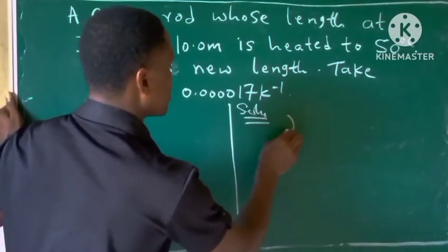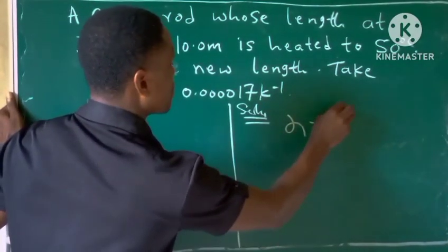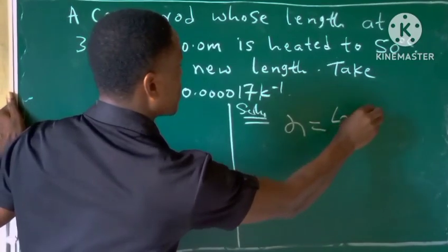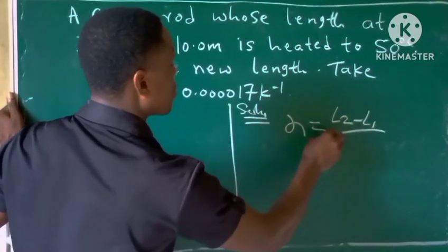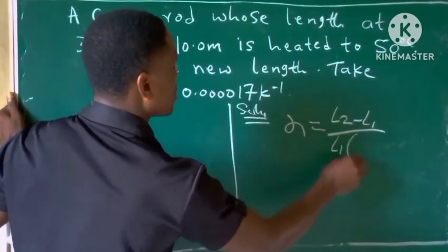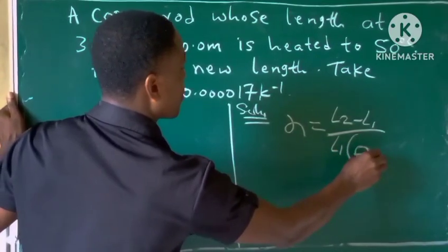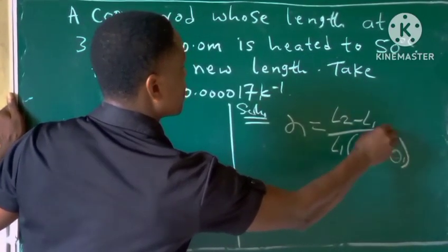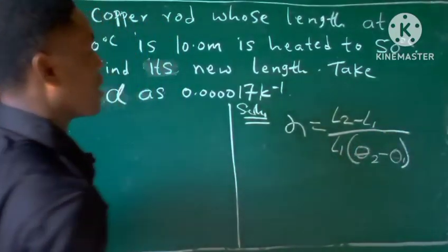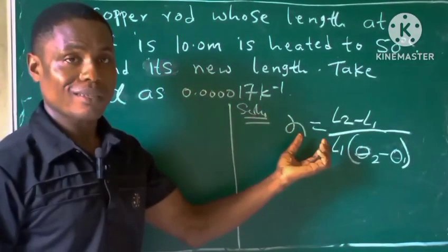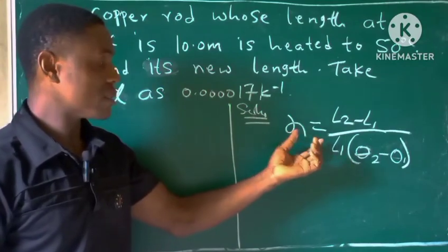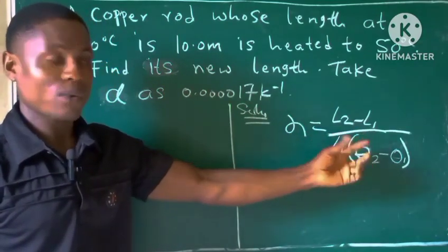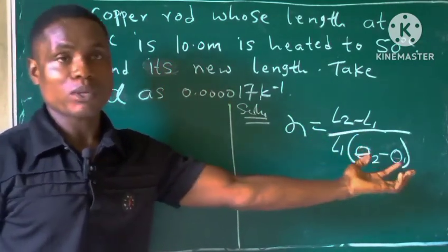From linear expansivity we have a formula which is: linear expansivity equals L2 minus L1, all over L1 multiplied by the two temperatures. So this is the formula for linear expansivity: L2 minus L1 all over L1 multiplied by the temperature.